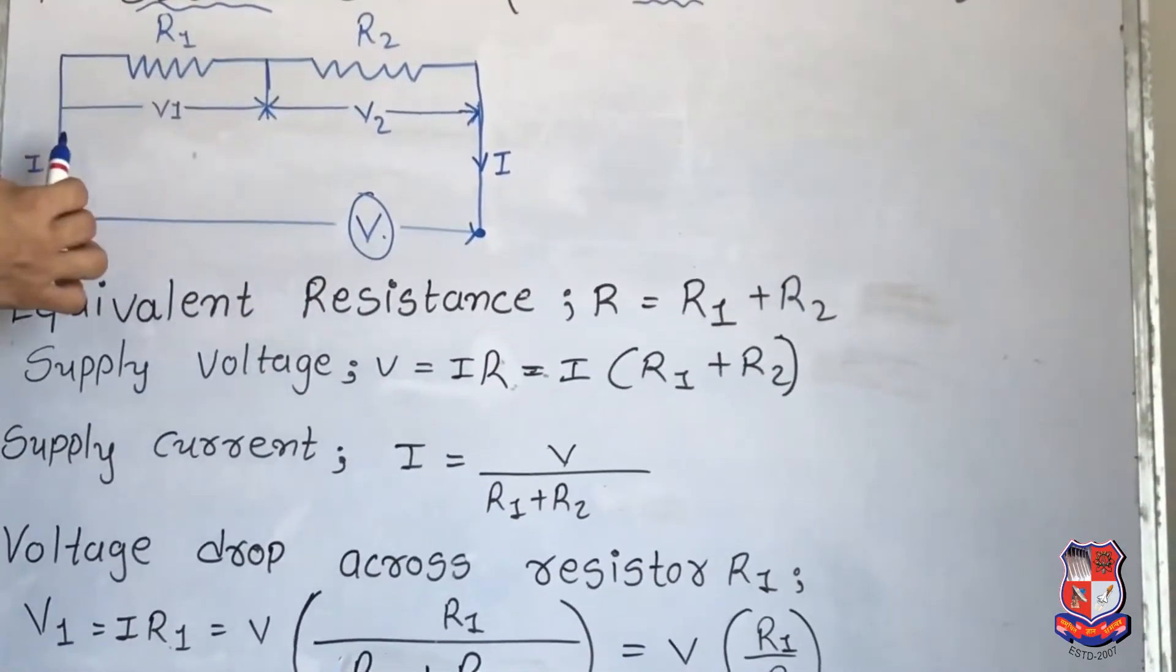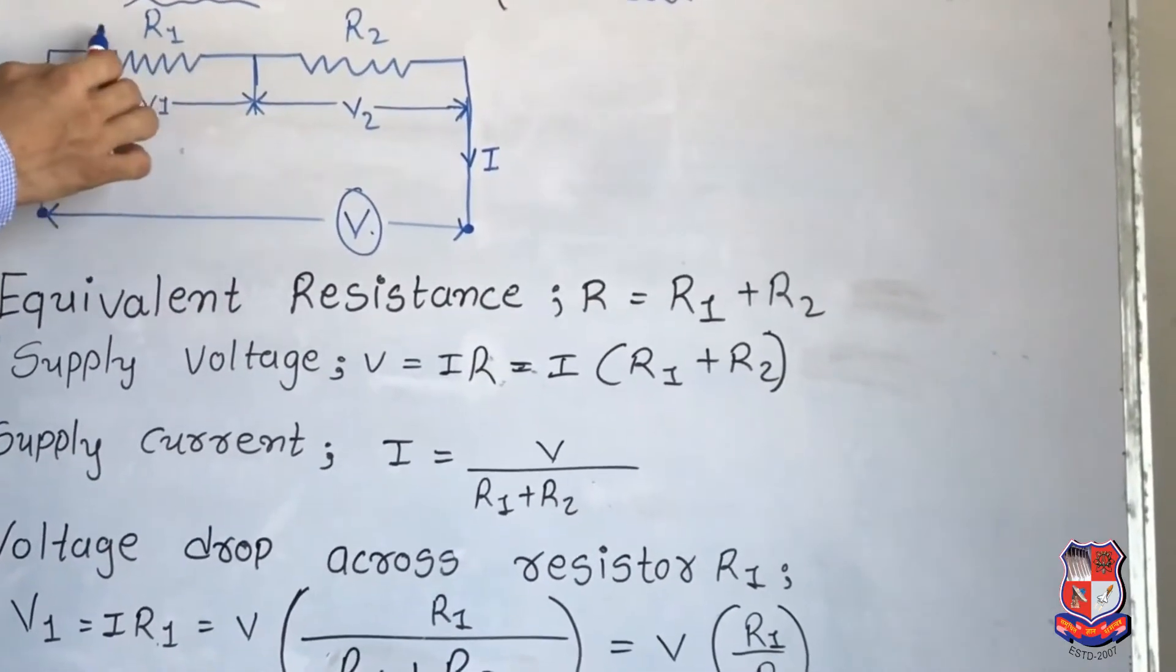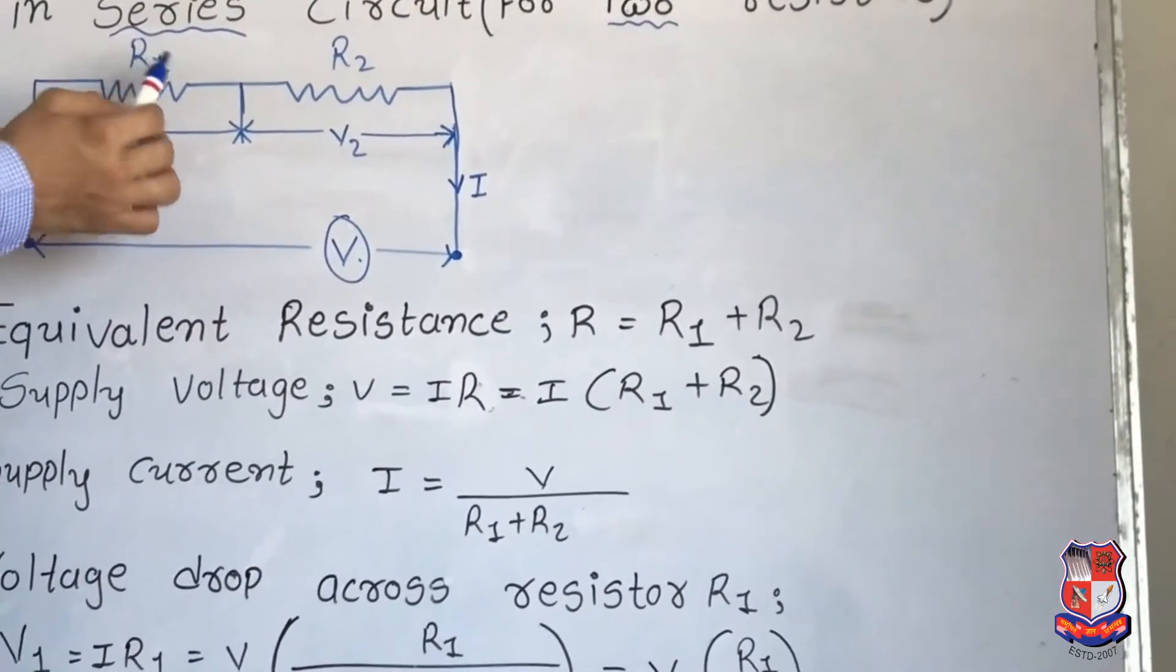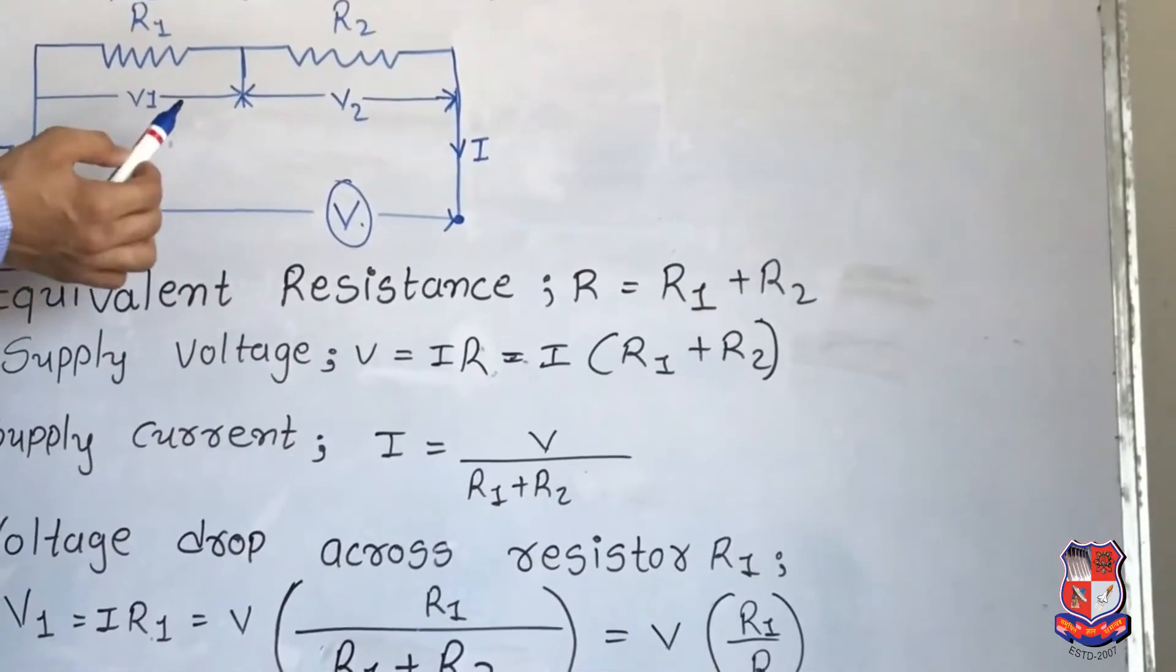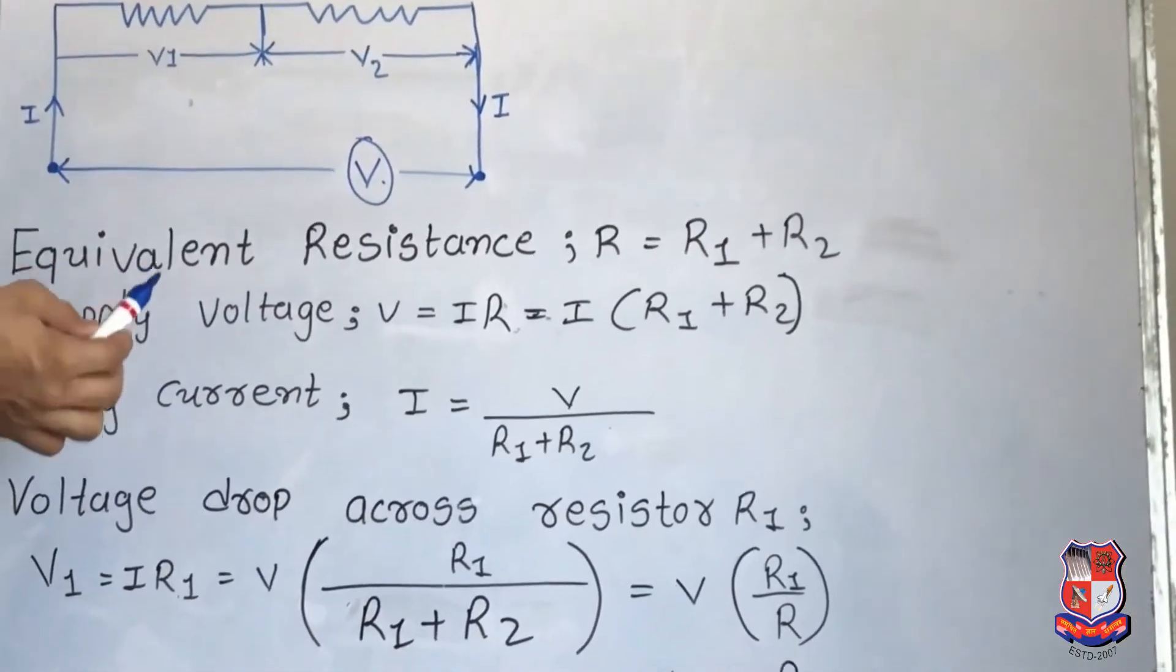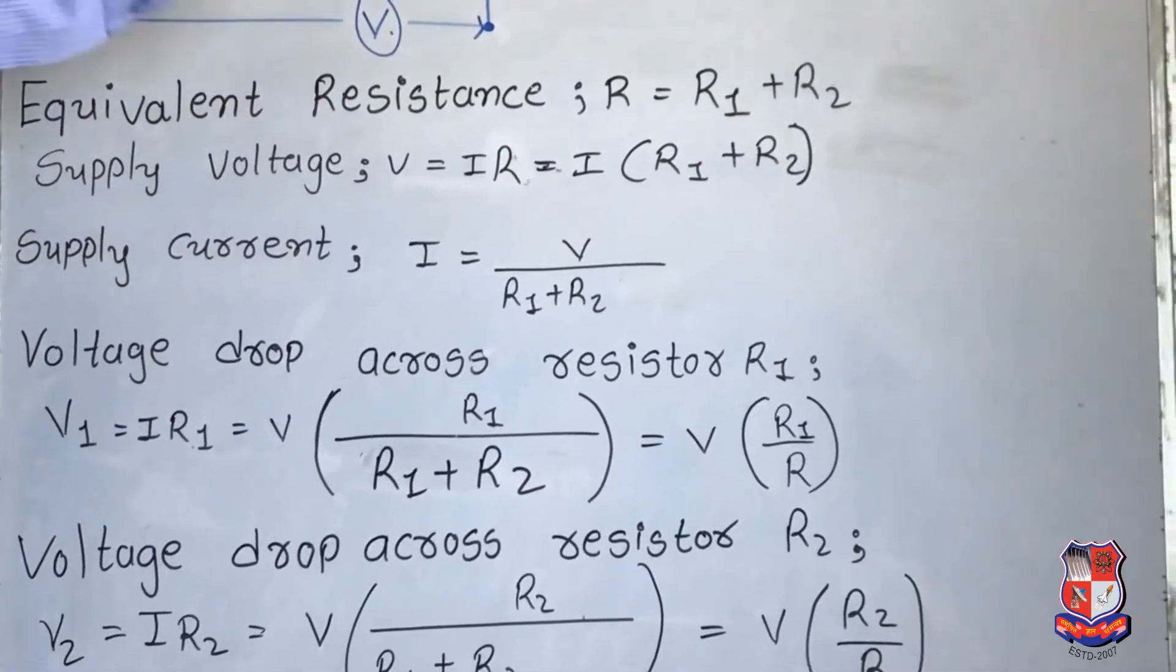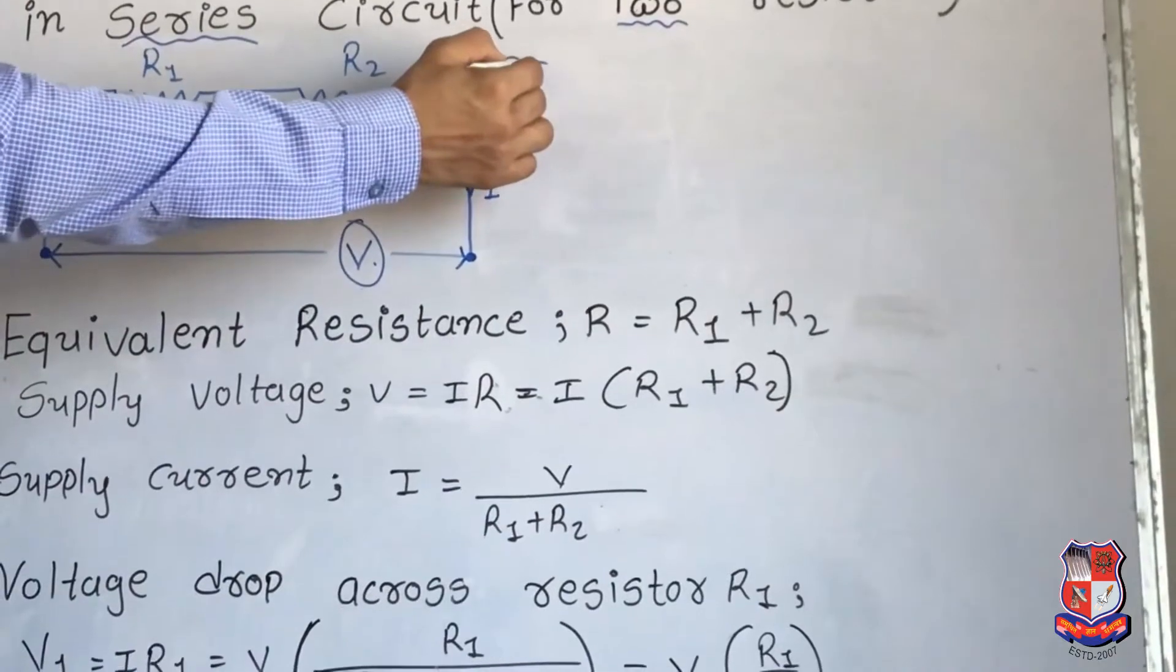At that time, current will flow. Then resistance will cause voltage drop. As a result of this equation, you find out total R.